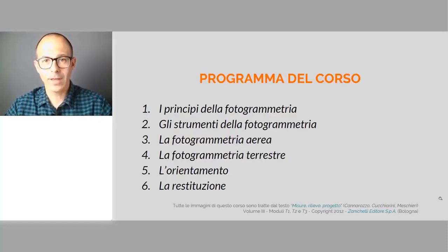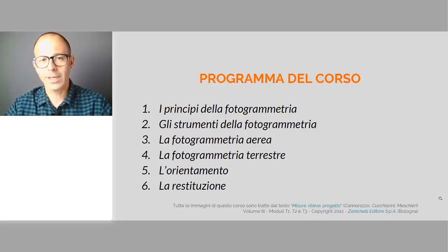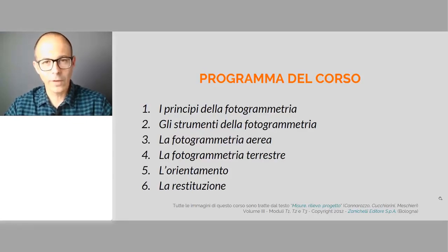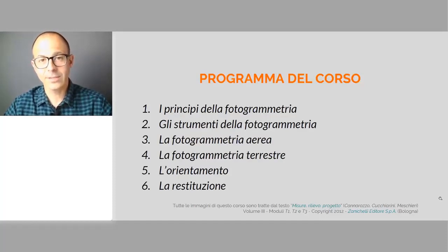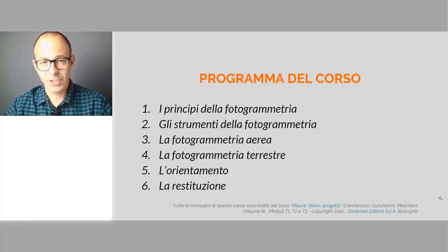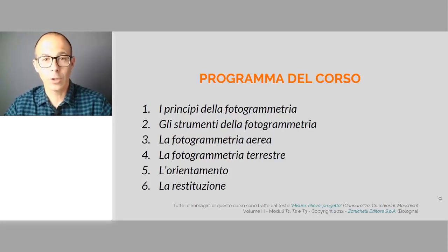Nel capitolo 3 e 4 parleremo delle due principali aree in cui la fotogrammetria si muove. La fotogrammetria terrestre prevede che la fotocamera sia a terra insieme all'operatore e fotografa elementi e oggetti abbastanza vicini, tipicamente antropici, quindi non elementi naturali.